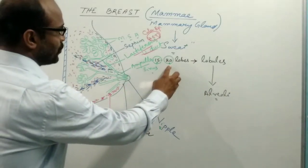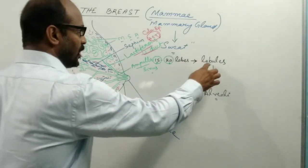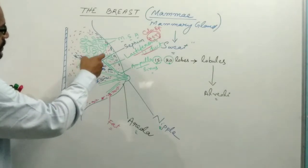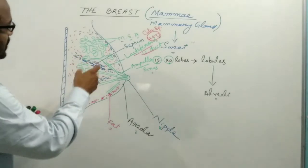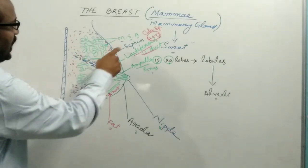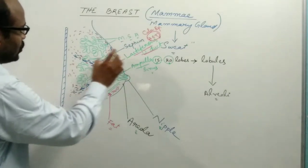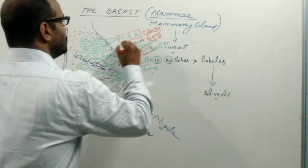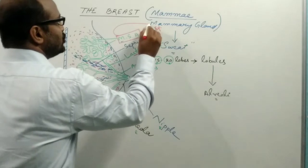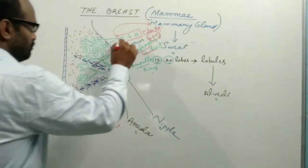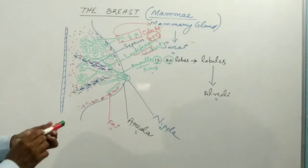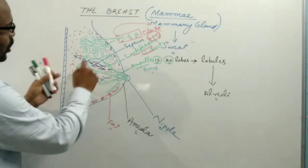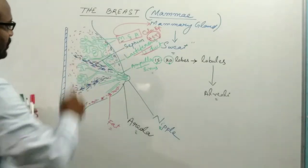The breast is composed of 15 to 20 lobes; each lobe is composed of several lobules, and each lobule has many alveoli. These alveoli are present like a rounded cluster of grapes, and all alveoli open into the lactiferous duct. A single lactiferous duct comes out from a single lobe of the mammary gland. In between the lobes there are septa made up of fibrous connective tissue.